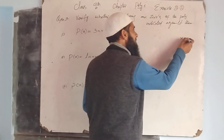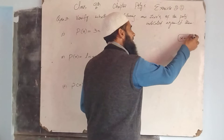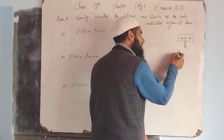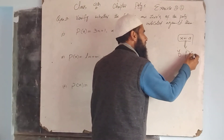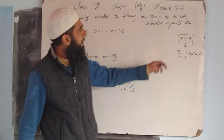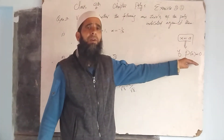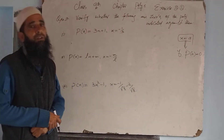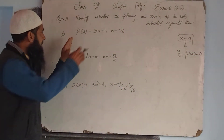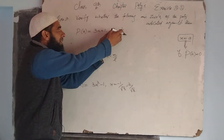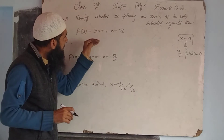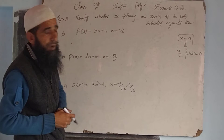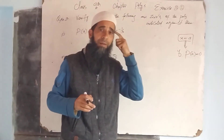This question starts with the definition of zeros of a polynomial. If X is equal to A is a zero of the polynomial, then P(A) is equal to zero — that is, if we substitute that particular value of X into the polynomial, we get zero.